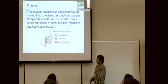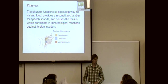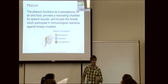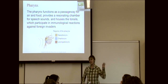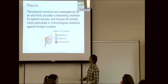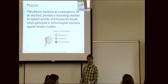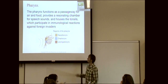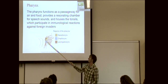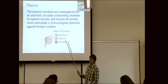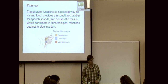The pharynx is divided into three regions with no physical barrier between them. The nasopharynx is close to your nose at the top, the oropharynx is the oral part in the middle, and the laryngopharynx is down by the larynx.